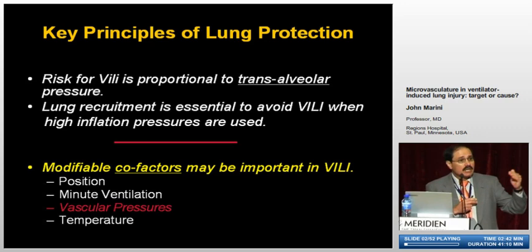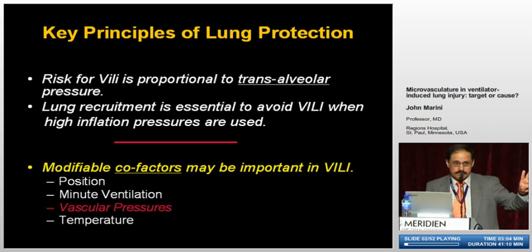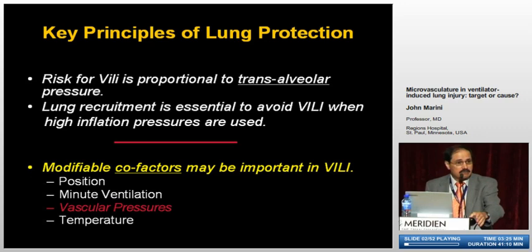I think we agree that the risk of ventilator-induced lung injury is proportional to the trans-alveolar pressure. Lung recruitment is essential to avoid ventilator-induced lung injury when, and possibly only when, high inflation pressures are being used. Modifiable cofactors may also be important and are relatively unexplored — including position, total minute ventilation requirement, temperature, and vascular pressure. I have data on all of those, but I'd like to focus on vascular pressure.